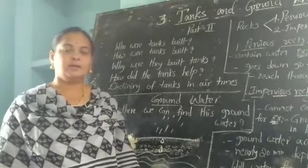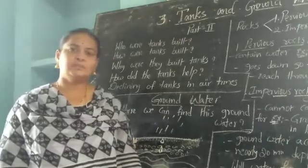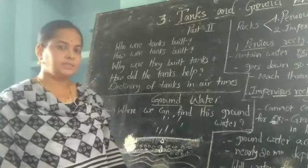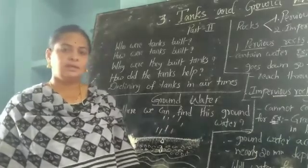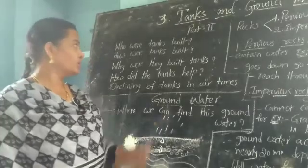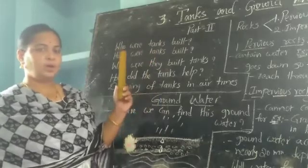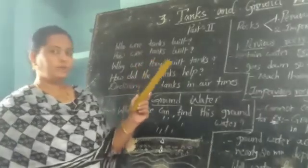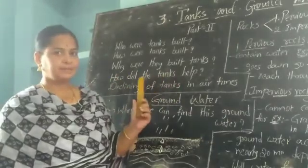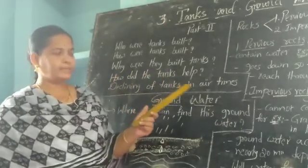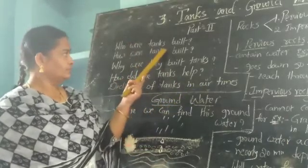Good morning children. In previous class we completed part 1 from lesson 3, Tanks and Brown Water. In the previous class we discussed about who built tanks, how tanks were built, why they were built, how tanks help us, and the declining of tanks.